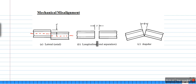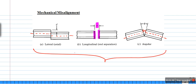The second type is called longitudinal displacement, where the end faces of the fibers are separated by a small distance s. The third type is angular displacement, where the axes of the two fibers make some angle theta. We call this angular displacement.